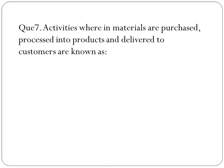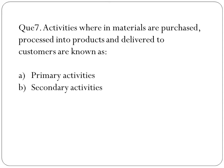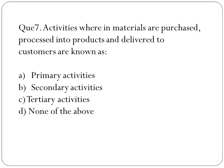Next question: activities wherein materials are purchased, processed into products, and delivered to customers are known as what? The options are primary activities, secondary activities, tertiary activities, or none of the above. The right answer is primary activities, because materials are first purchased, then processed, then delivered.